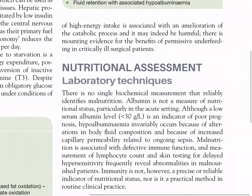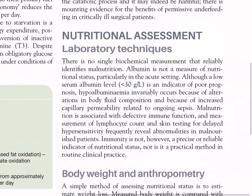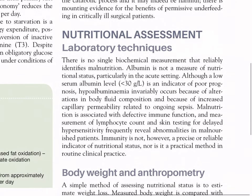Nutritional assessment — laboratory techniques: there is no single biochemical measurement that reliably identifies malnutrition. Albumin is not a measure of nutritional status, particularly in the acute setting, although a low serum albumin level less than 30 grams per liter is an indicator of poor prognosis. Hypoalbuminemia invariably occurs because of alteration in body fluid composition and because of increased capillary permeability related to ongoing sepsis.